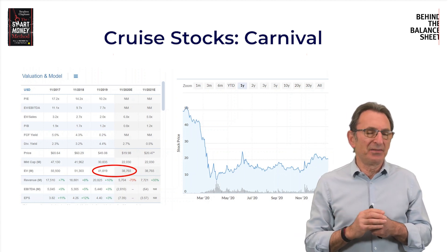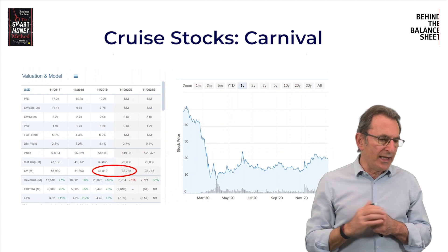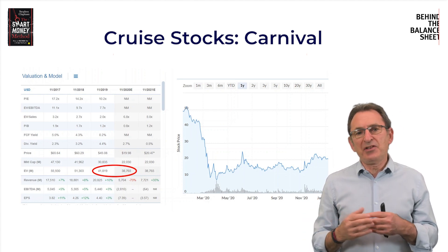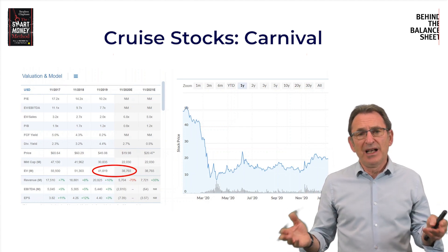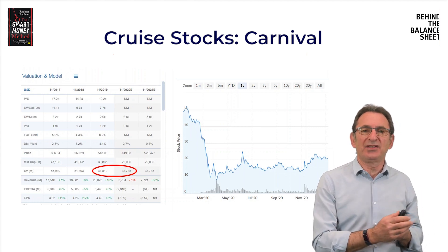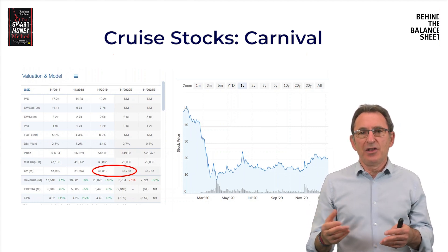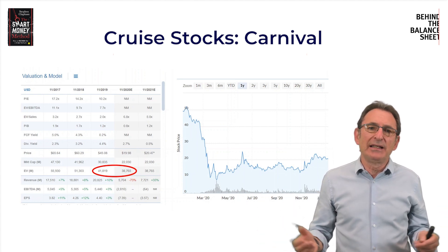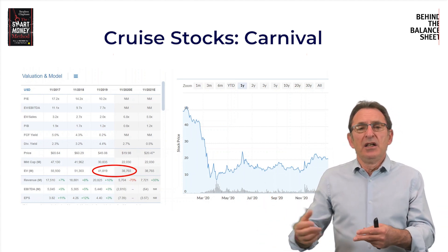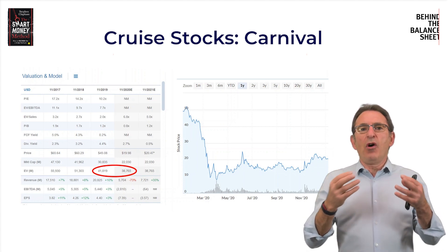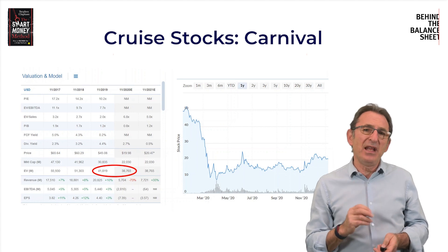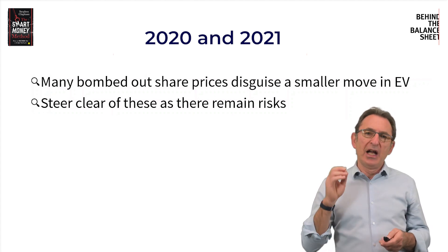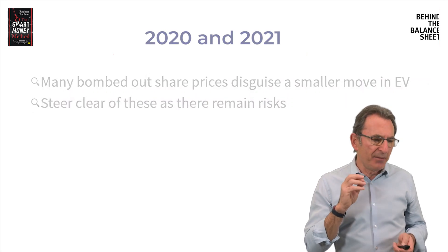It's not been a high-return industry to be fair, but you can see in that table that the comparison of enterprise values is striking — ironically, the enterprise value of Carnival and some of its peer group has actually been higher recently than it was pre-COVID. The reason is that these companies have built up a pile of debt during the period where they obviously haven't been sailing, and they've also issued more equity. So if you just look at the share price you'll be drawn to these companies, but in fact that could be a very dangerous investment mistake. Many of these bombed-out share prices disguise a much smaller move in the enterprise value, and you need to steer clear of these situations because they remain very risky.